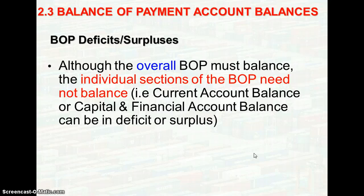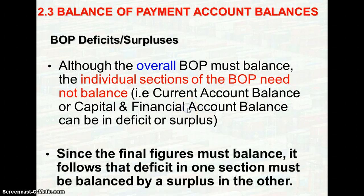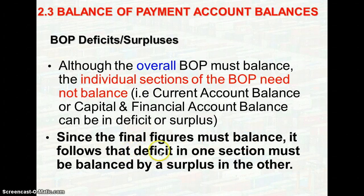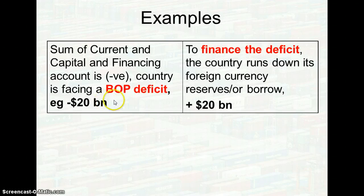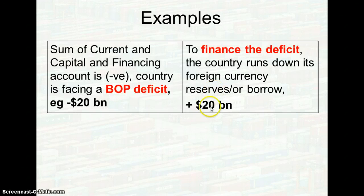Although the overall balance of payment must balance, the individual sections — the current account and capital and financial account — do not need to be balanced individually; they could be in deficit or surplus. Since the final figures must be balanced, a deficit in one section must be balanced by a surplus in another. For example, if the sum of the current and capital and financial account is negative, the country faces a balance of payment deficit. To finance this deficit, the country will run down on foreign currency by selling it in return for more home currency in the economy, which is then considered an inflow.